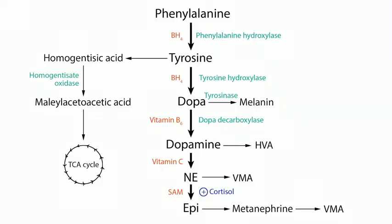PKU stands for phenylketonuria. PKU is definitely high yield for Step 1 — it's about a four-star topic. There are actually two ways you can get PKU: you can either be deficient in the enzyme phenylalanine hydroxylase, which converts phenylalanine to tyrosine, or you can be deficient in the cofactor for phenylalanine hydroxylase, which is tetrahydrobiopterin.